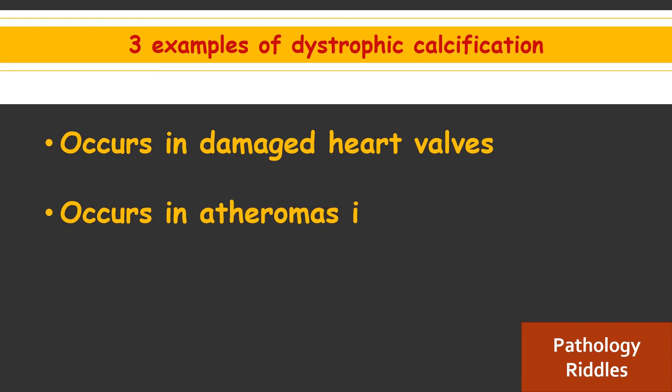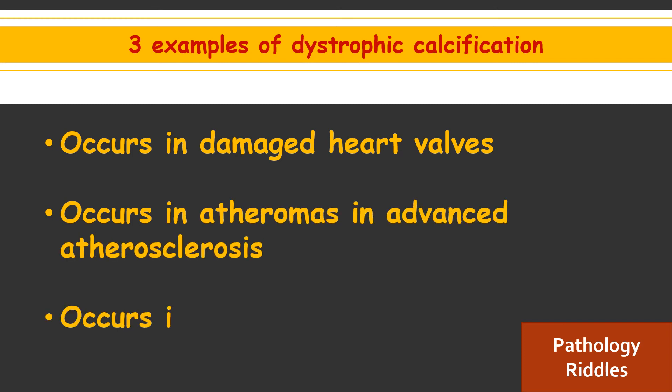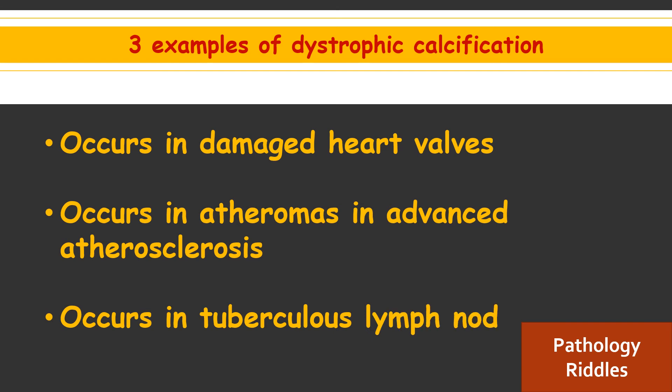What are three examples of dystrophic calcification? They can occur in damaged heart walls, they can occur in atheromas in advanced atherosclerosis, or they can happen in a lymph node affected by tuberculosis.